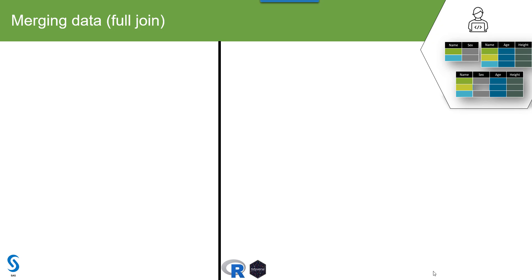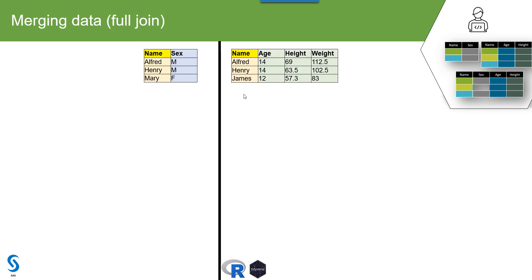Let's say we have a dataset called 'sex' which contains the names of students and their sex. We have a second dataset called 'AHW' which contains age, height, and weight for students. Alfred, Henry, and Mary are in the first dataset, while Alfred, Henry, and James are in the second. So James has no sex information in the first dataset, and Mary has no age, height, or weight in the second.